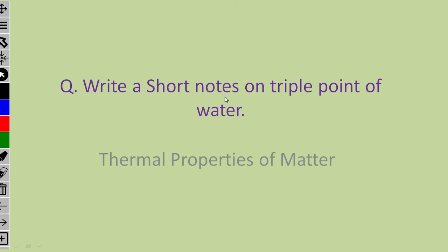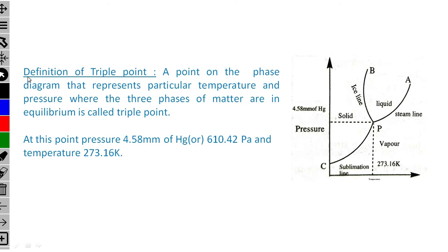Our question is: write a short note on the triple point of water. This is from the chapter thermal properties of matter, junior intermediate. The definition of triple point: a point on the phase diagram that represents a particular temperature and pressure where the three phases of matter are in equilibrium is called the triple point. The graph has pressure on the y-axis and temperature on the x-axis.